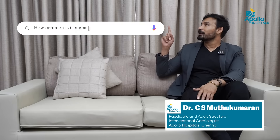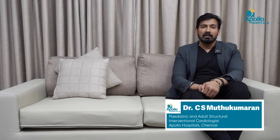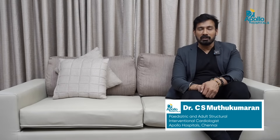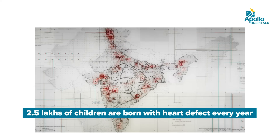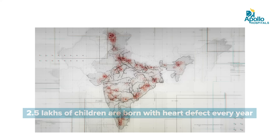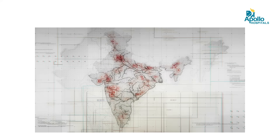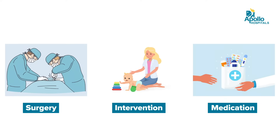How common are congenital heart defects? Congenital heart defects affect around 8 per 1000 live births. If you take the population and birth rate of India into account, around 2.5 lakh children are born every year with heart defects, and most of them would require some form of surgery, intervention, or medication to cure them.